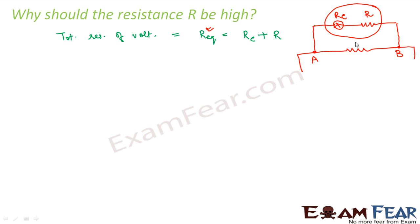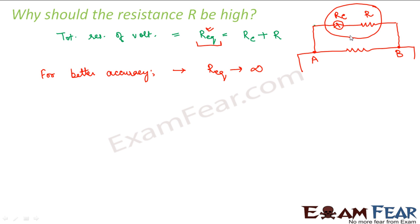So what should be done to reduce the inaccuracy? For better accuracy, it is said that this R equivalent should be infinite — that means this resistance should be very high. If this R equivalent is very high, the amount of current flowing through this circuit will be very less. If R equivalent becomes infinite, current will be zero — no current will be there. That means there will be no current drawn to the voltmeter circuit, so the current through the main circuit will remain unchanged. When the current remains unchanged, the potential difference will also remain unchanged.